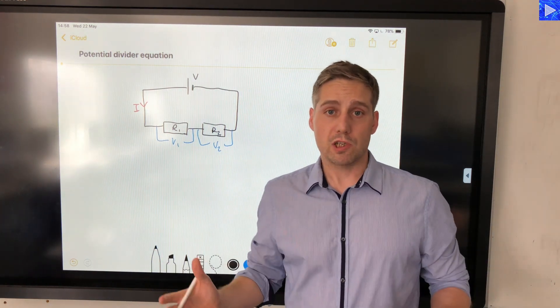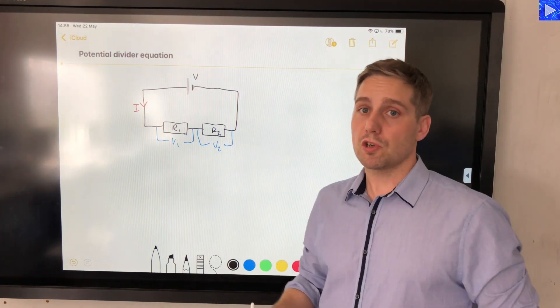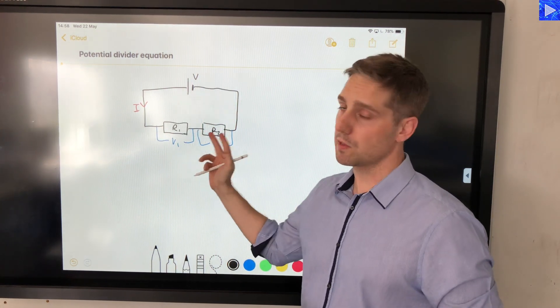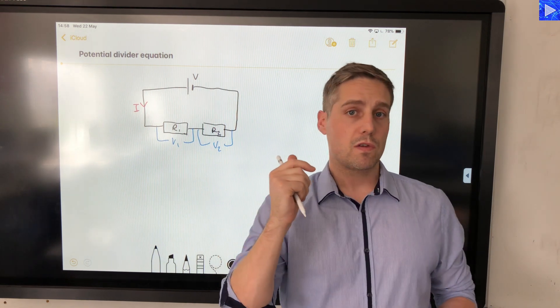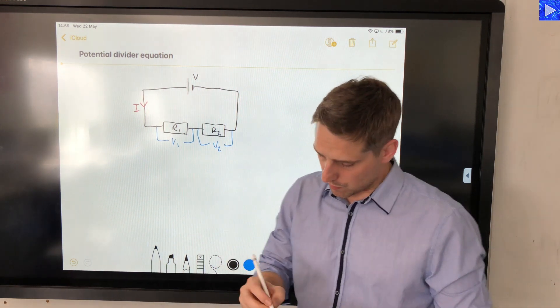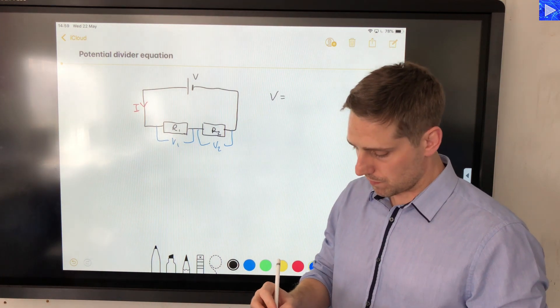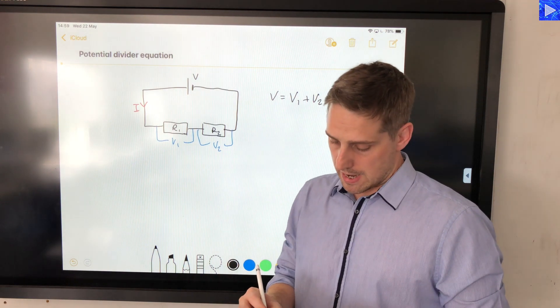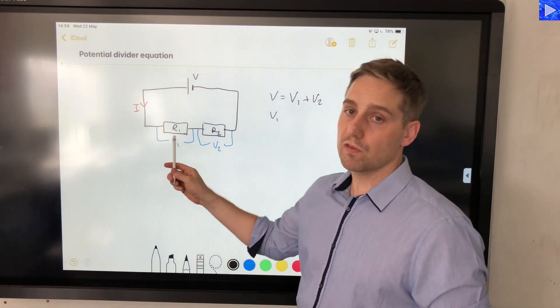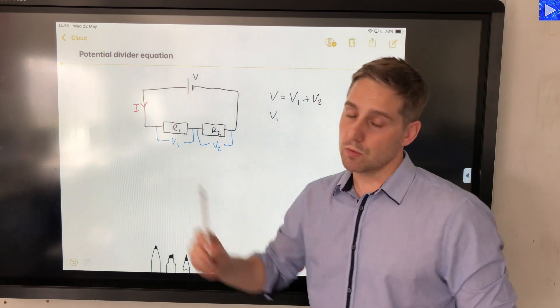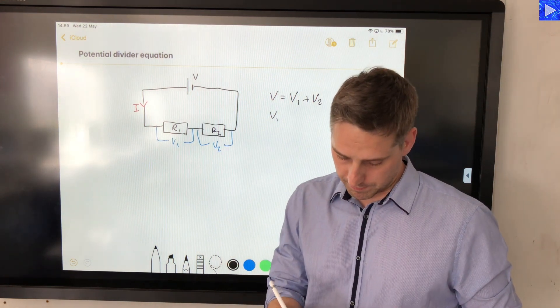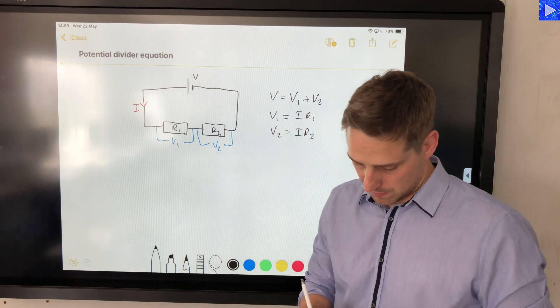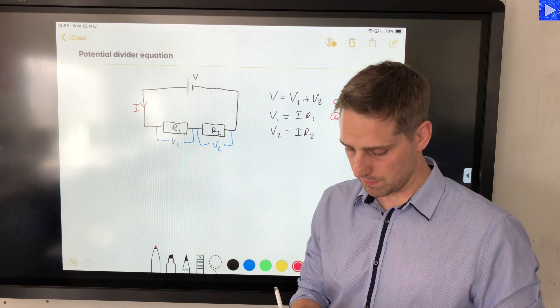What we're going to do to actually derive our equation is use our knowledge of series circuits where the individual potential differences will add up to the total input, and a liberal helping of Ohm's law. So let's write down our equations first. We've got V is equal to V1 plus V2, summing up the PDs. And if we apply Ohm's law to this first resistor, V1 will equal I times R1. V equals I times R1, and V2 equals I R2. So we have our equations here: 1, 2, and 3.